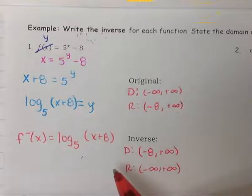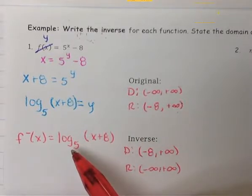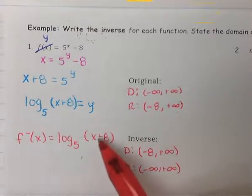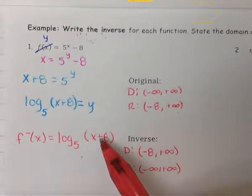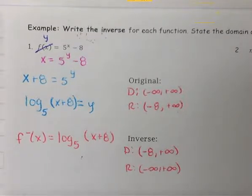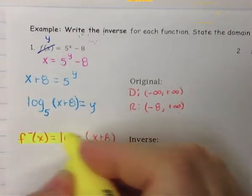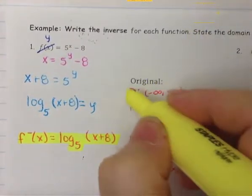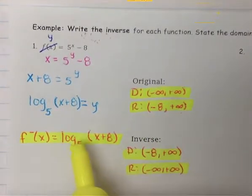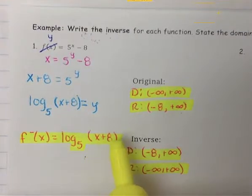Logarithms should have an asymptote at the h value for the domain. If we solve for that, x plus 8 equals 0, we subtract 8 and get negative 8. So our domain is correct — we have that negative 8 asymptote. When converting back the other way, you would need to get the logarithm and what it's connected to alone, which is why it's important to keep those parentheses.